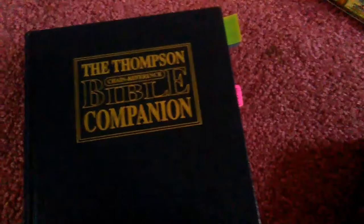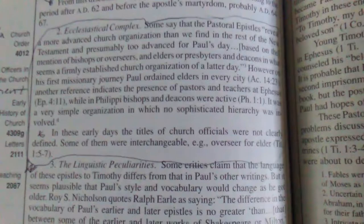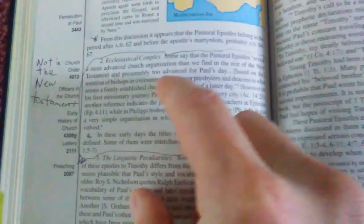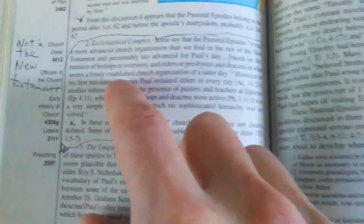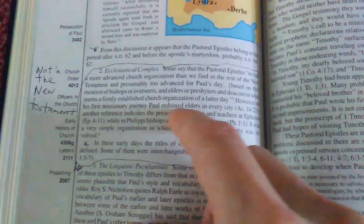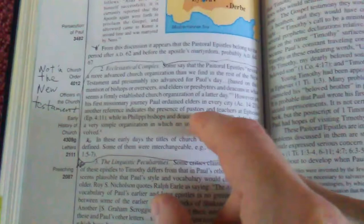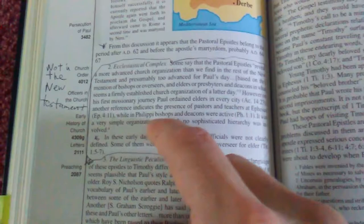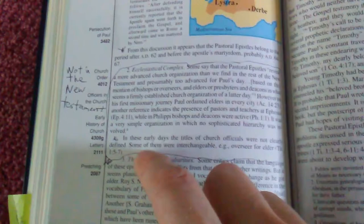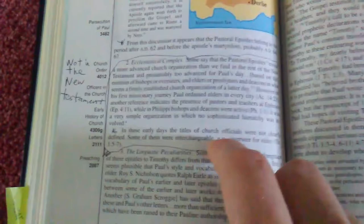This Thompson Chain Reference Bible Companion, he actually says, right here, he says that some say that the pastoral epistles reveal a more advanced church organization than we find in the rest of the New Testament, and presumably too advanced for Paul's day, based on the mention of bishops or overseers, and the elders or presbyters and deacons in what seems a firmly established church organization of the latter day. However, on his first missionary journey, Paul ordained elders in every city, Acts 14:23. Another reference indicates the presence of pastors and teachers at Ephesus, Ephesians 4:11. While in Philippi, bishops and deacons were active, Philippians 1:1. It was a very simple organization in which no sophisticated hierarchy was involved. In these early days, the titles of church officials were not clearly defined. Some of them were interchangeable, e.g. overseer for elder, Titus 1, verses 5-7.